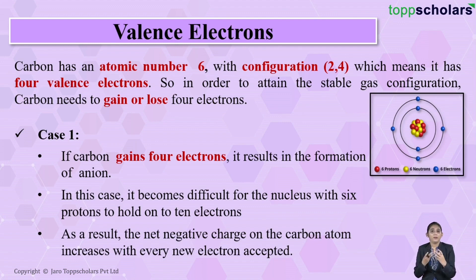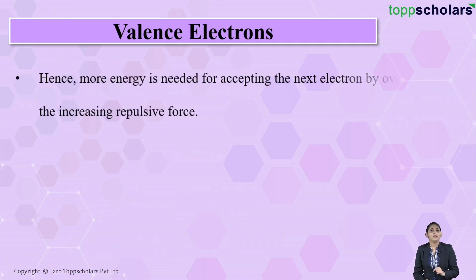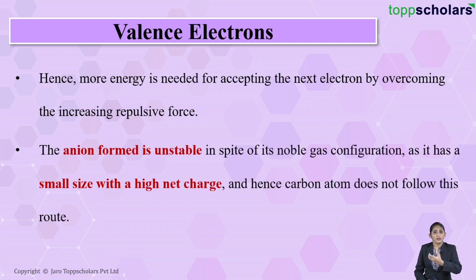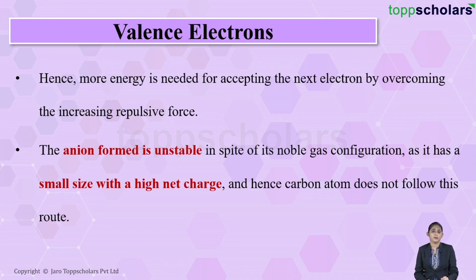As the net negative charge on the carbon atom increases with every new electron accepted, more energy is needed to accept the next electron because it must overcome the increasing repulsive force. The C⁴⁻ anion formed has a small size and a high net charge, making it unstable in spite of its noble gas configuration. This is why the carbon atom does not follow this route for becoming stable.